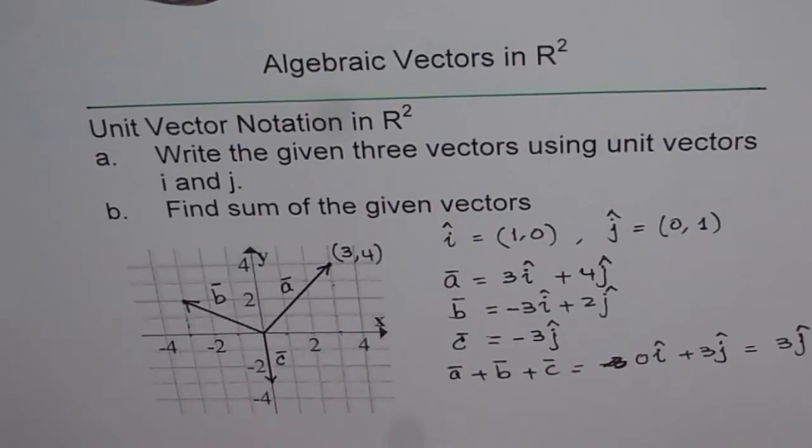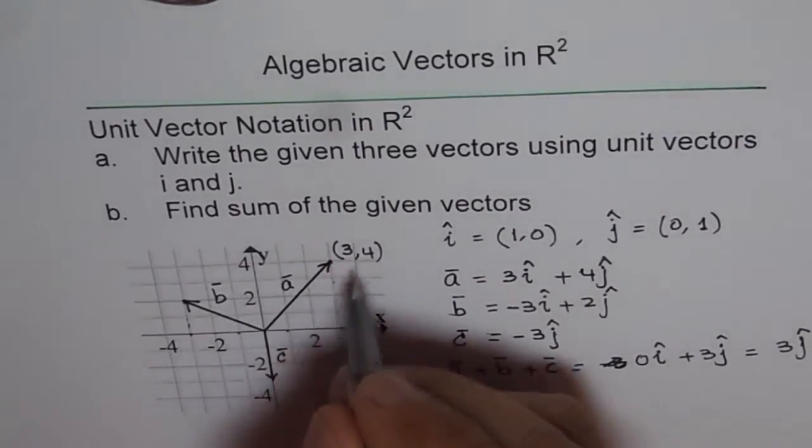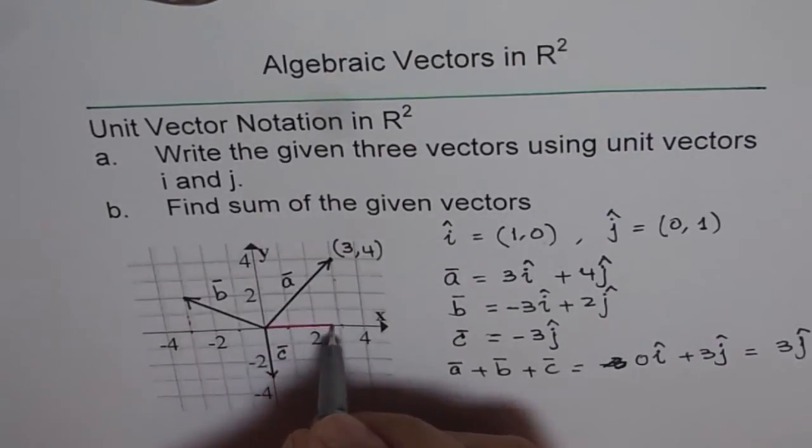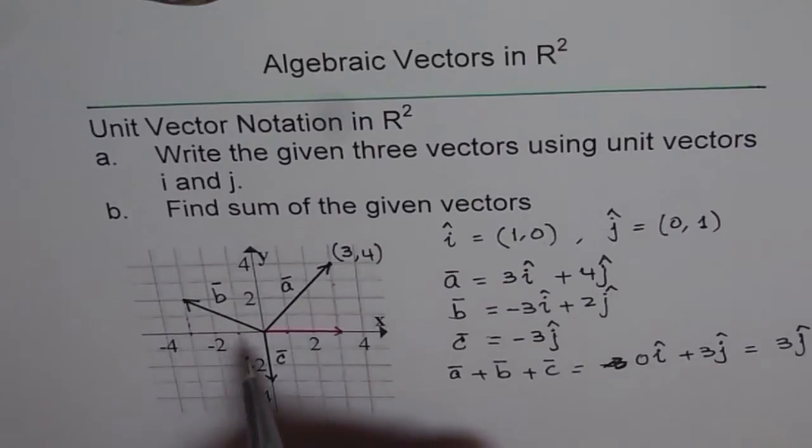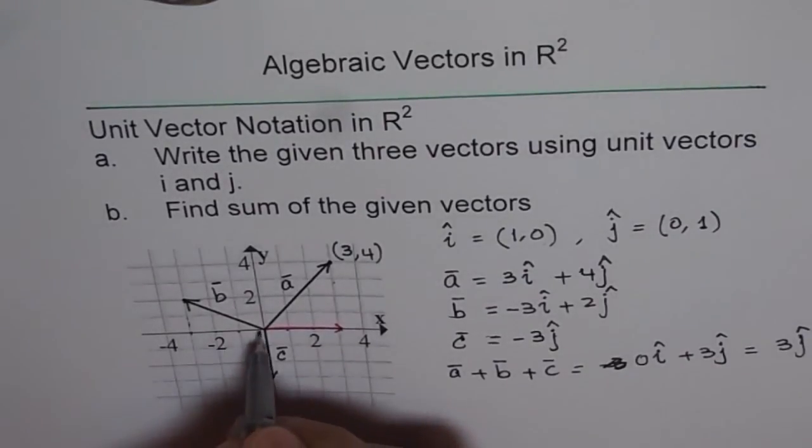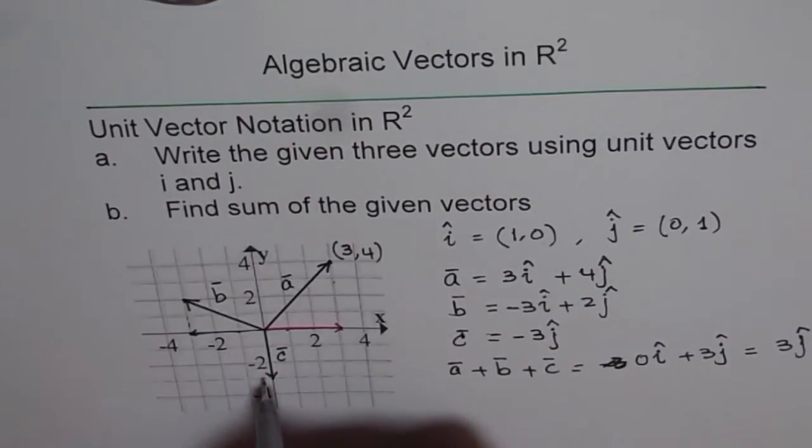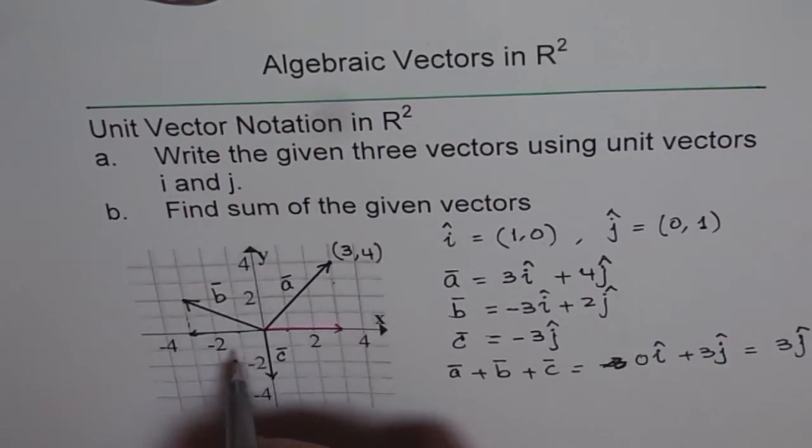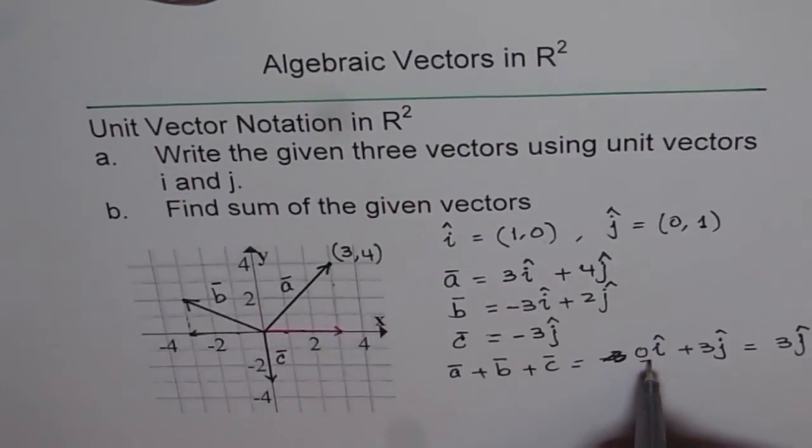As you can see here, if I resolve the vectors, let's say the first vector is (3, 4). So its x component is shown here. And the x component for the vector B is in this direction. The C does not have any component along x-axis. Now, these two are equal. So they cancel out. So we get a 0 here.